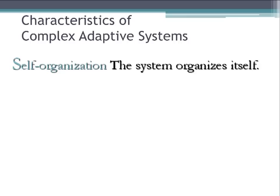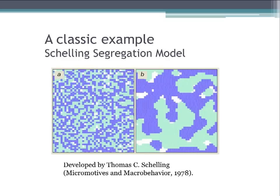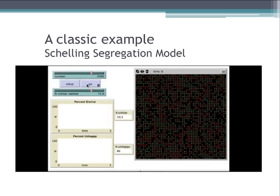Another characteristic of complex adaptive systems is self-organization — the system organizes itself. A classic example is the Schelling segregation model. Schelling was a social scientist working in Chicago in the 1970s studying how segregation forms. In a NetLogo model of this experiment, there are 2,000 agents, either green or red, living in a two-dimensional grid. Each agent has a 'percent similar wanted' — the percentage of neighbors that need to be the same color for the agent to be happy and stay put.